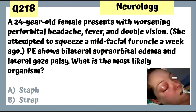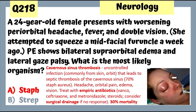Question 218: A 24-year-old female presents with worsening periorbital headache, fever, and double vision. PE shows bilateral periorbital edema and lateral gaze palsy. The most likely organism is staph because this is cavernous sinus thrombosis. We treat with empiric antibiotics, give steroids to reduce inflammation, and consider surgical drainage if no response. Even with treatment, this condition has a 30% mortality.